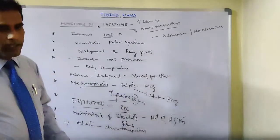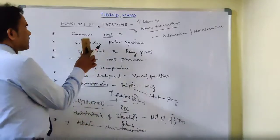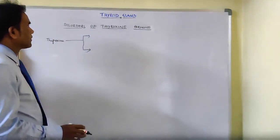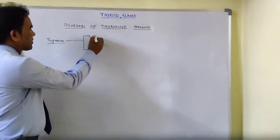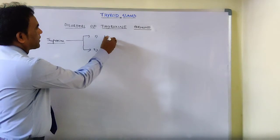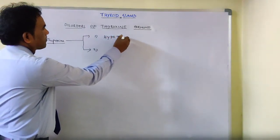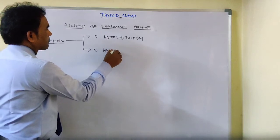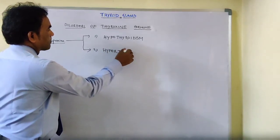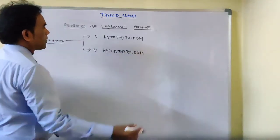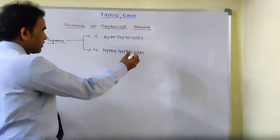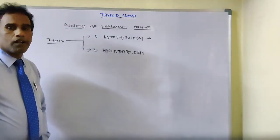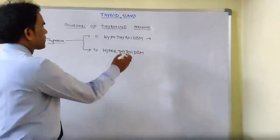Now let us see the disorders of thyroid glands — the disorders of thyroxine hormone. There are two categories: number one is hypothyroidism, and number two is hyperthyroidism. Hypothyroidism means insufficient secretion or undersecretion of thyroxine hormone, which leads to hypothyroidism.